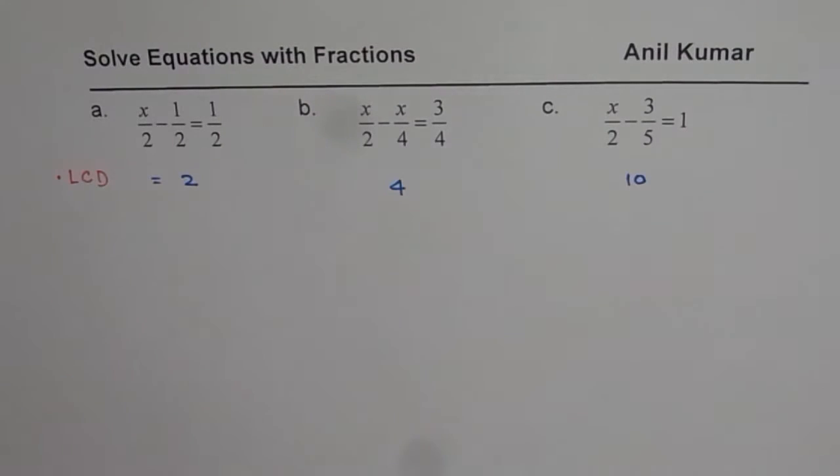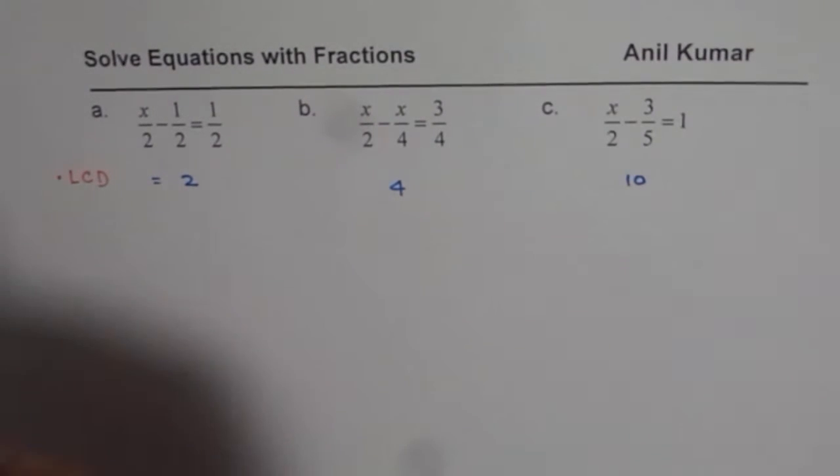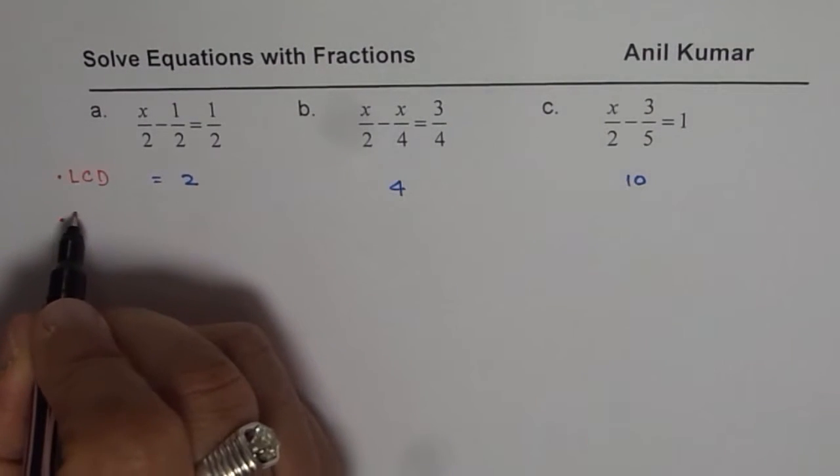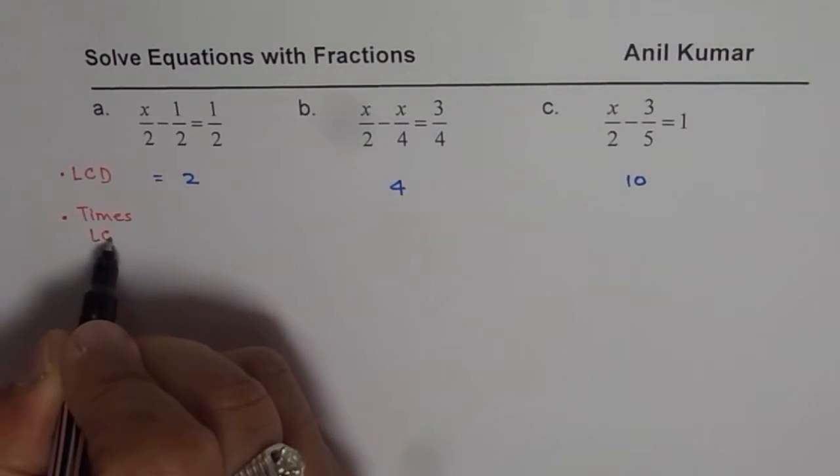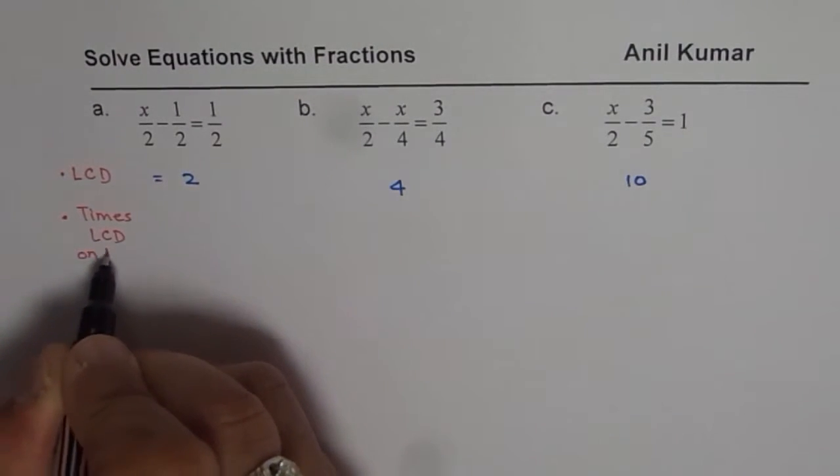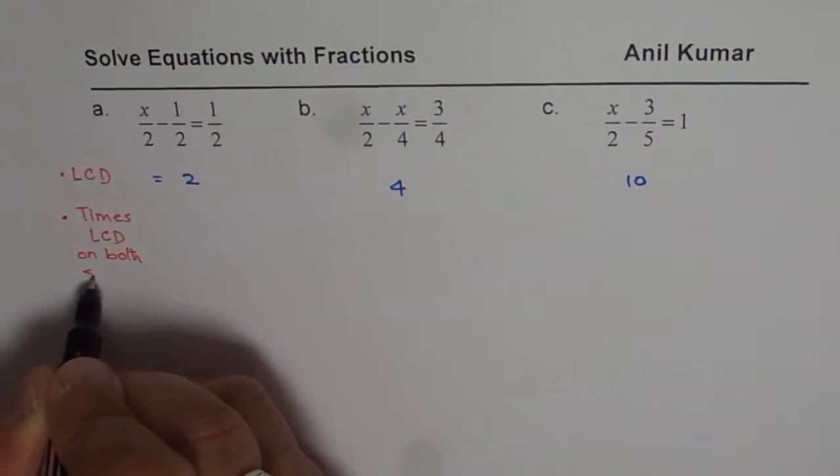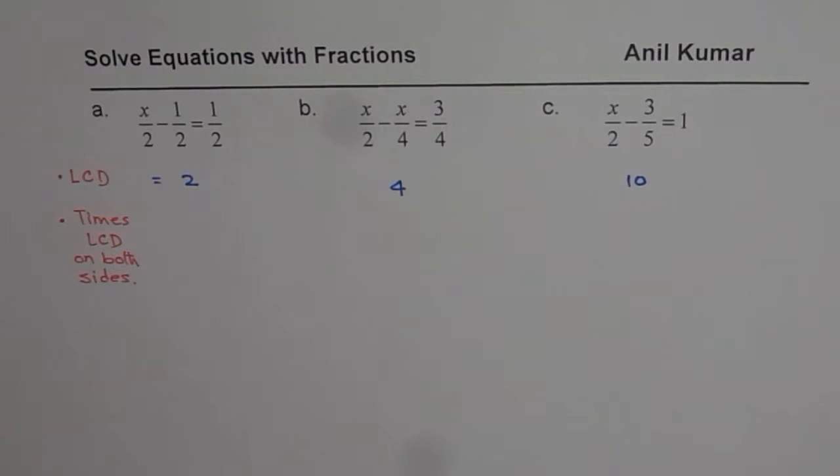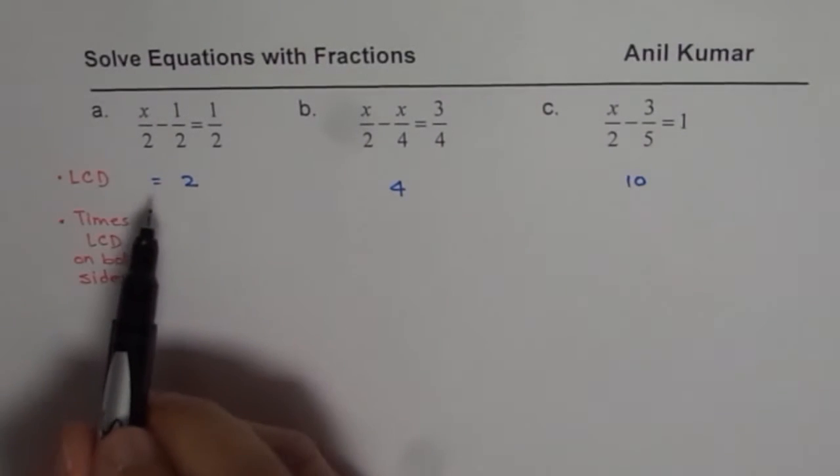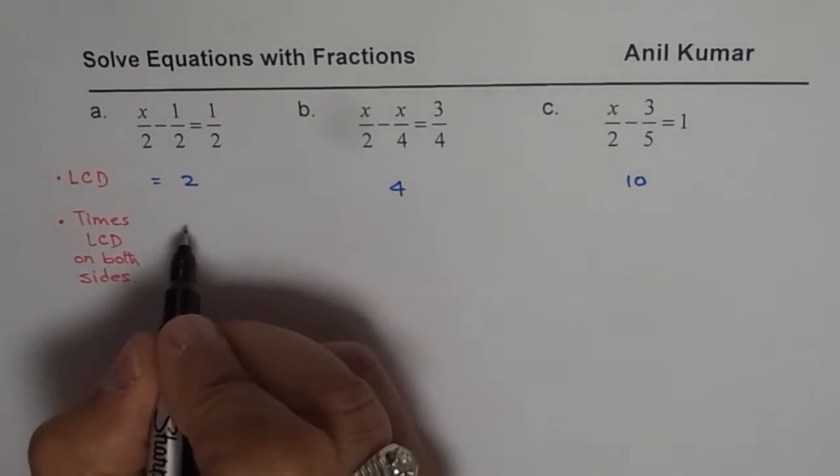So we are discussing this strategy at present. So once you know what the common denominator is, then what you need to do is times both sides. So do times least common denominator on both sides. So that is your next step to solve the question. So really, the question solution starts from here. Once you know the common denominator, copy the question.